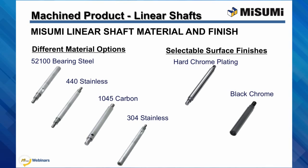Linear shafts can be specified with the following materials: 52-100 bearing steel, 440C stainless steel, 10-45 carbon steel, and 304 stainless steel. Misumi also allows for the option of hard chrome plating and low temperature black chrome plating for certain material options.